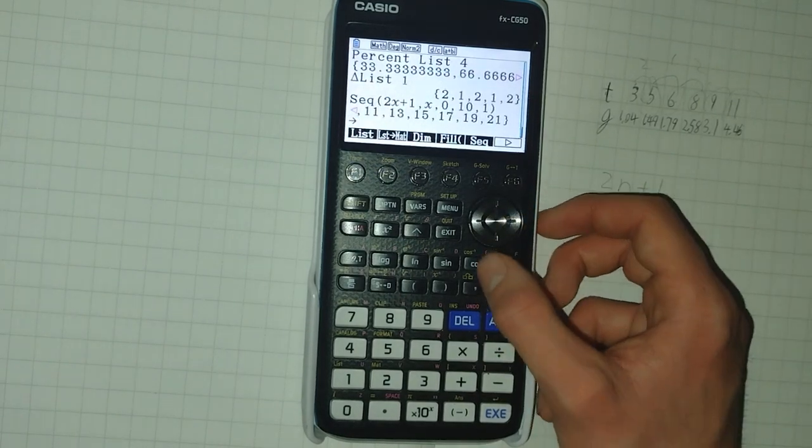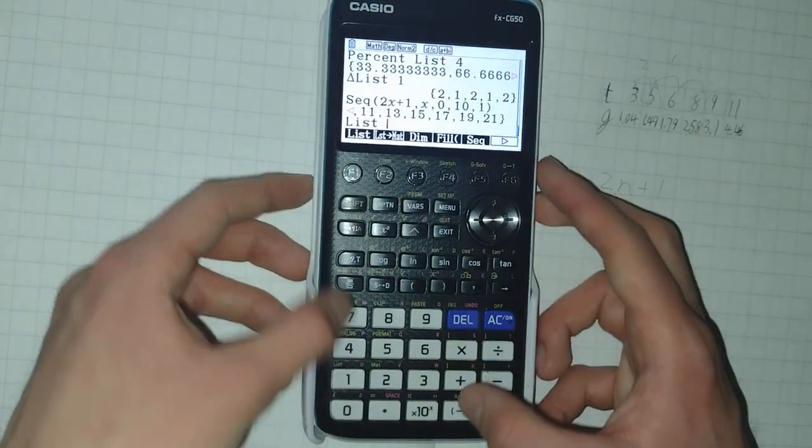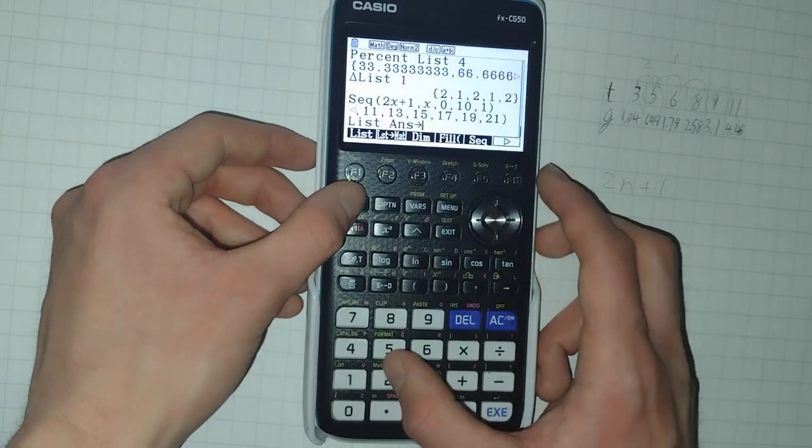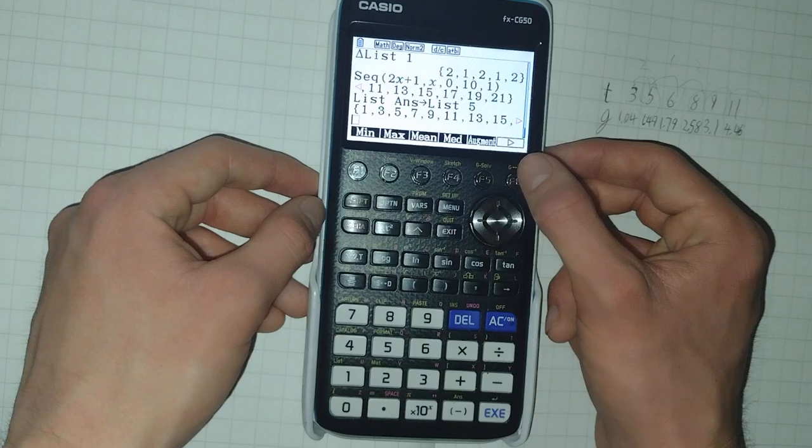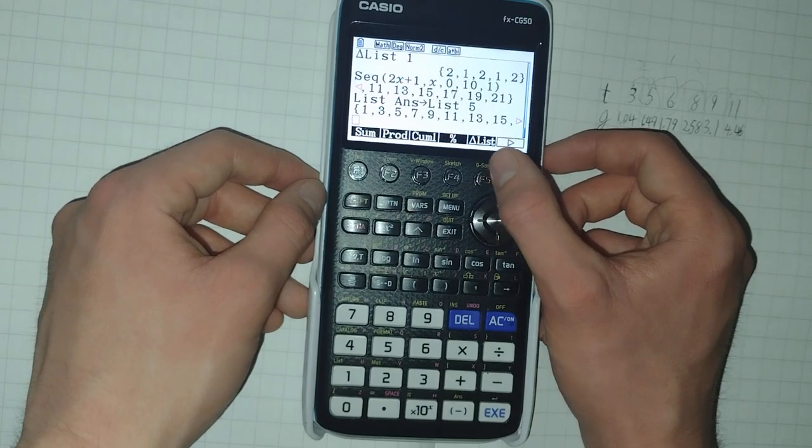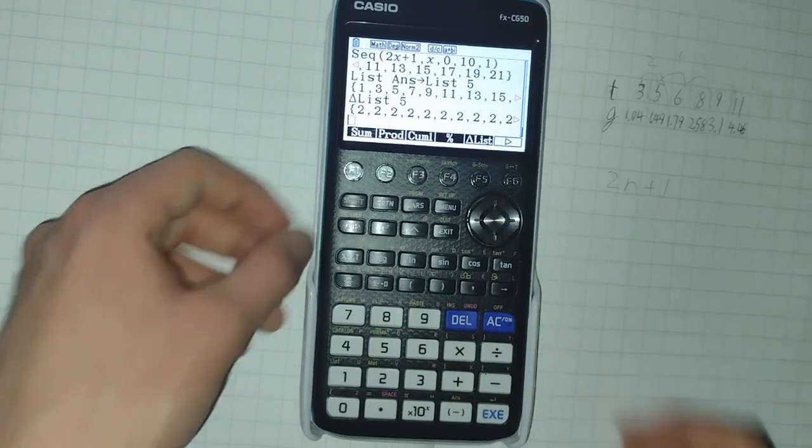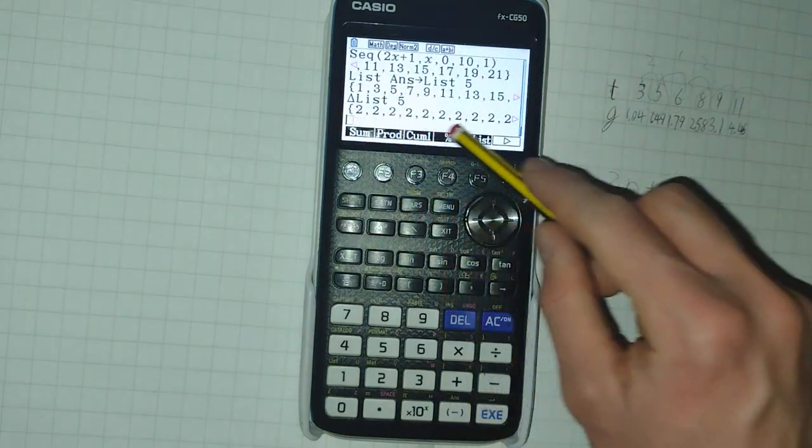And we can then assign this, of course, back into list five. And then, just to demonstrate, we can go to delta list of five. And it gives us the differences. All is two.